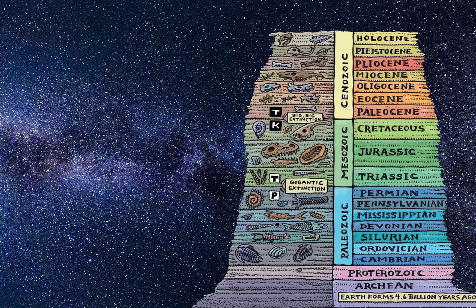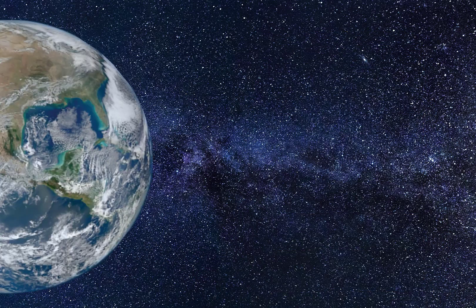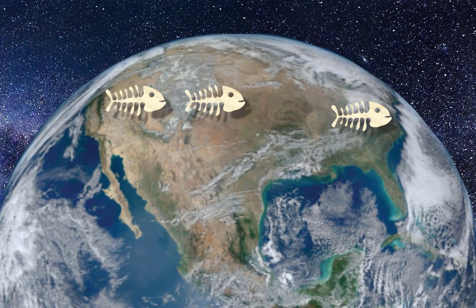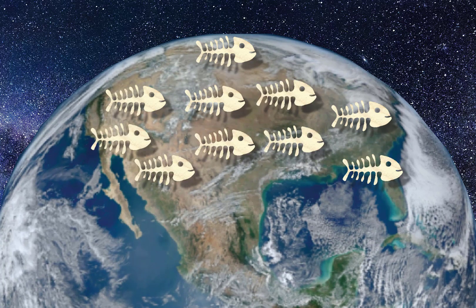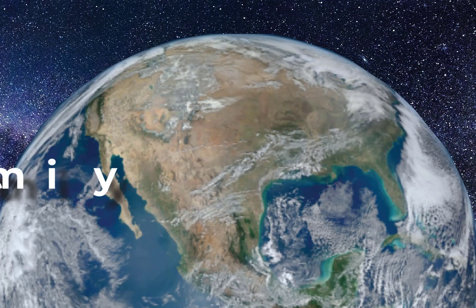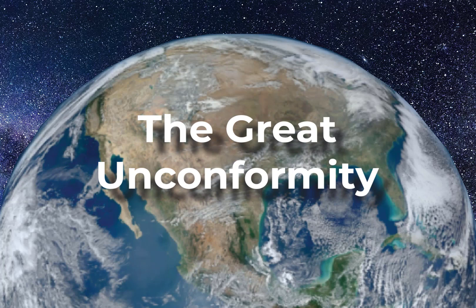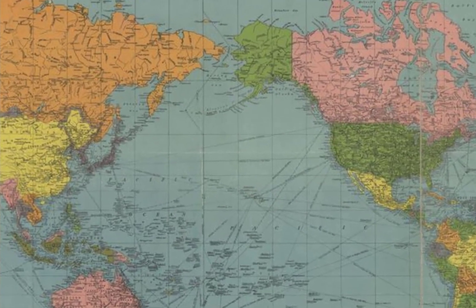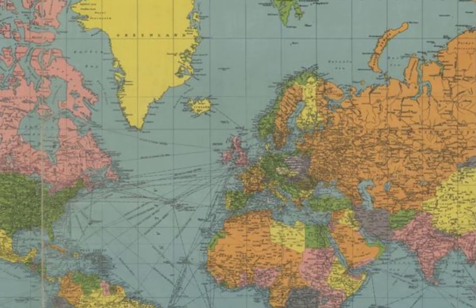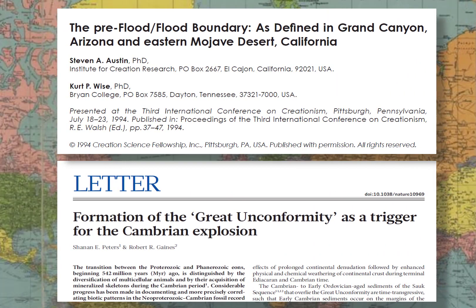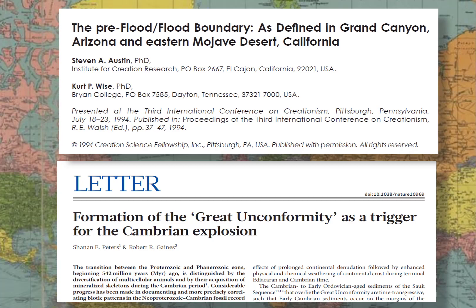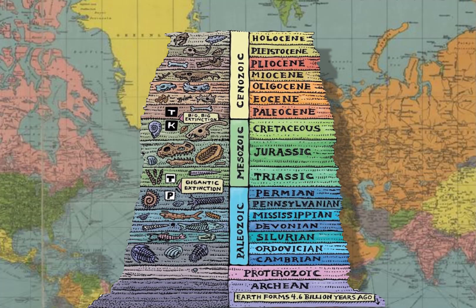Another key piece of evidence supporting a pre-flood/flood boundary right here in the geologic record is the presence of fossilised marine animals in sediments that spread over all of the world's continents. This fits nicely with the account of the global flood as recorded in Genesis 6-9. A third piece of evidence is the existence of a widespread surface of erosion called the Great Unconformity. This surface of erosion occurs at many localities around the world, and its existence is supported by both creationists and secular scientists alike. Most creationists believe that only a catastrophic worldwide flood comparable to the flood of Noah could produce such a universal surface of erosion. The Great Unconformity usually sits stratigraphically below the fossil-rich Cambrian sediments, seeming to support a flood that started right here.